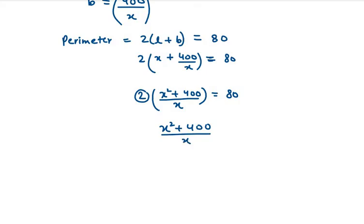80 over 2 can be written as 40. So now this x will take to right inside. x square plus 400 equals 40x. Now 40x will take left inside. x square minus 40x plus 400 equals 0.